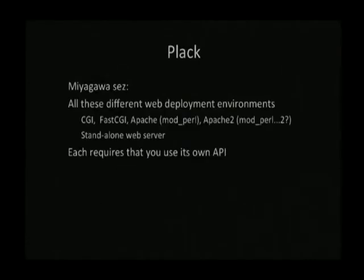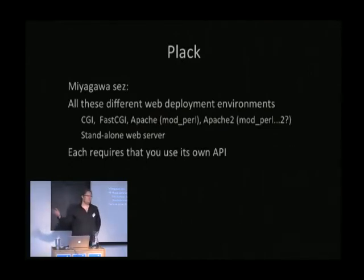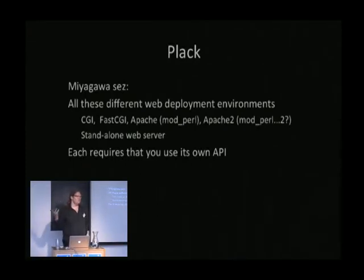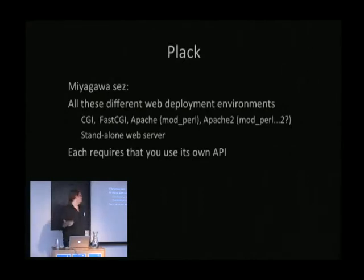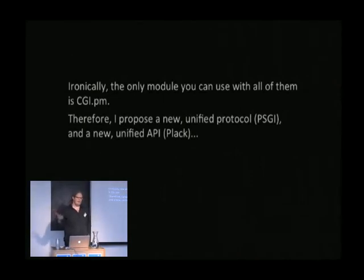Miyagawa, in his presentation about Plack, he says: look, there's all these different web deployment environments where we need to run code, like Apache, CGI, FCGI, standalone web servers, and each one has its own totally different API.